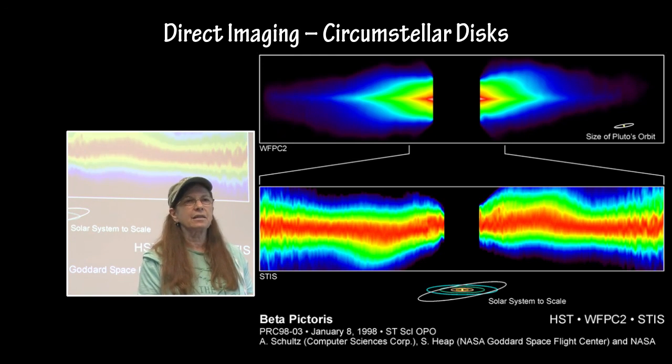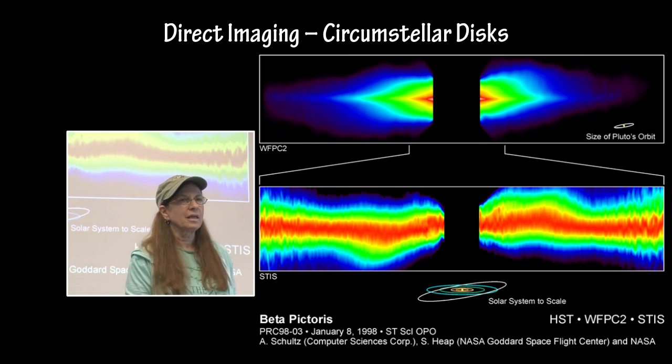And of course, very distinctive gaps within the disk anywhere shows that there's something in there that is gathering up all the material and probably is a planet.